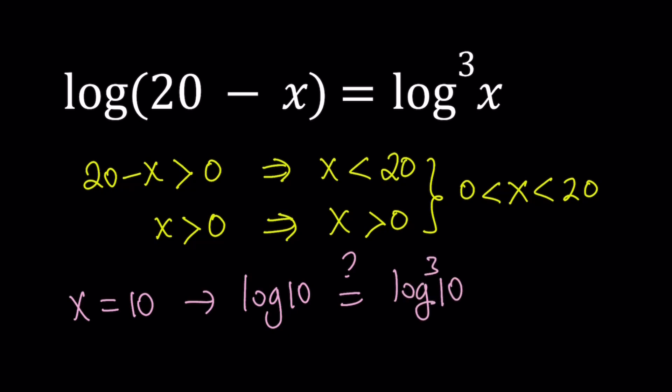And then on the right hand side, because 20 - 10 is 10, you get log 10 to the third power. Now, are they equal? The answer is yes, because log 10 is equal to 1. And then when you cube it, you're going to get 1 again. So they're equal. It's good.